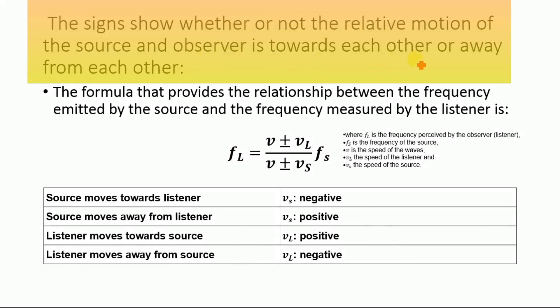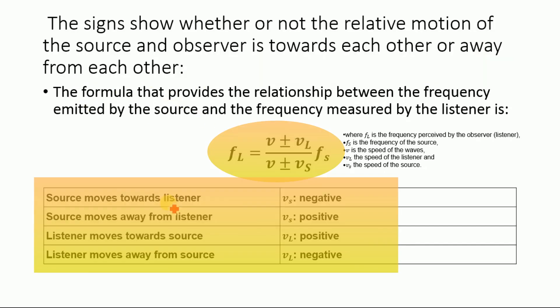When the source moves toward the listener, VS will be negative. When the police vehicle or police car approaches your car, VS will be negative. When the source moves away from the listener — when the police vehicle is moving away from your car — VS will be positive.